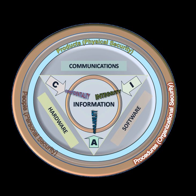Procedures evolved to ensure documents were destroyed properly, and it was the failure to follow these procedures which led to some of the greatest intelligence coups of the war, e.g., the capture of U-570. The end of the 20th century and the early years of the 21st century saw rapid advancements in telecommunications, computing hardware and software, and data encryption. The availability of smaller, more powerful and less expensive computing equipment made electronic data processing within the reach of small business and the home user. These computers quickly became interconnected through the Internet. The rapid growth and widespread use of electronic data processing and electronic business, along with numerous occurrences of international terrorism, fueled the need for better methods of protecting the computers and the information they store, process and transmit. The academic disciplines of computer security and information assurance emerged along with numerous professional organizations, all sharing the common goals of ensuring the security and reliability of information systems.